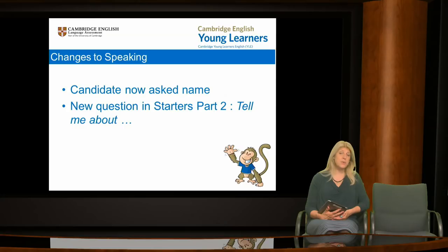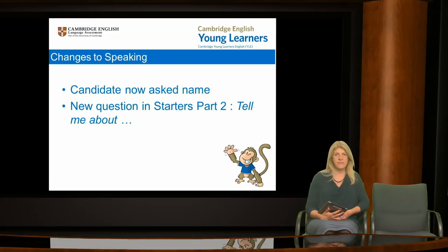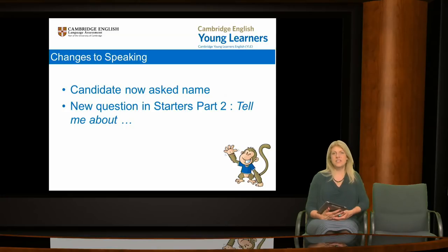The first opportunity is at the beginning, where candidates are asked to say their name — this is also felt to be a more natural way to start the test. Starters candidates are just asked to give their name. Movers candidates are asked to give their name and age. And at flyers, candidates are asked to give their first and family names and age. At starters, we've also incorporated a new 'tell me about' question, which encourages children to extend their spoken responses. Let's take a look at this now.